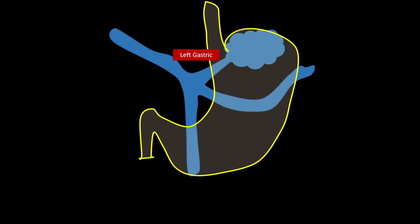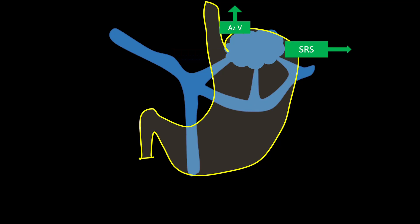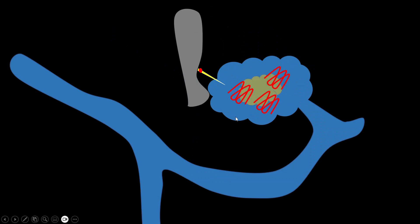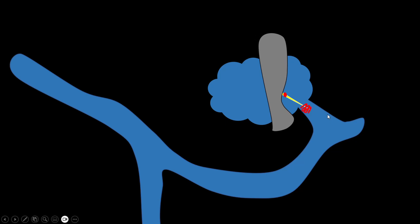Gastric varices are usually fed by the short gastric, posterior gastric, or left gastric vein, and drain into a splenorenal shunt or occasionally into the azygous venous territory. Understanding how the inflow feeders work is important — when using EUS to occlude varices, we are covering a large area. If we change the point of injection to the feeder vessel, this can be done much more easily with much less material to block it.